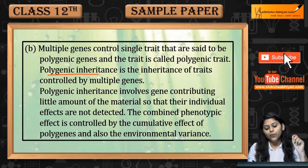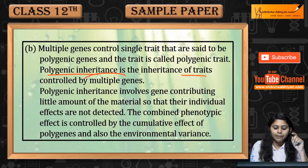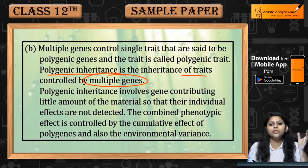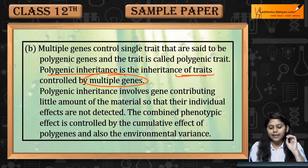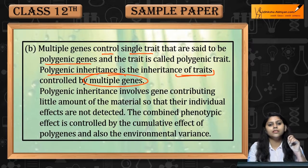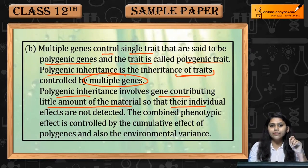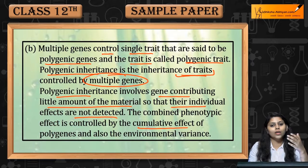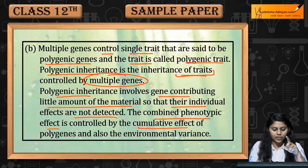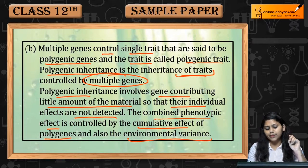Polygenic Inheritance क्या है? It is the inheritance of traits that are controlled by multiple genes. Multiple genes control any single trait — such genes are said to be polygenic genes, and the traits are polygenic traits. Polygenic Inheritance involves genes that contribute a little amount of material, so their individual effect is not detected. The cumulative effect appears — that is, combined phenotypic effect is controlled by the cumulative effect of polygenes and also environmental variants.